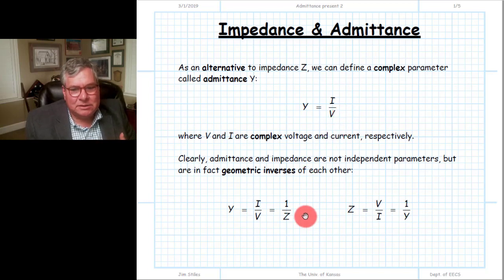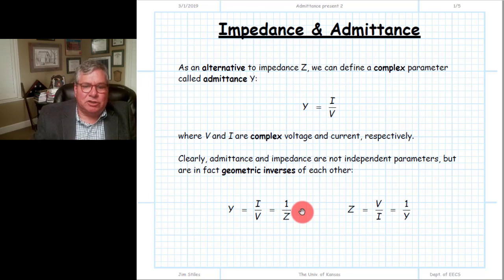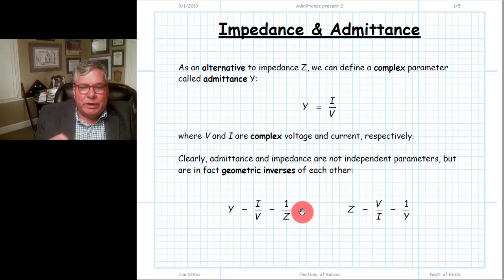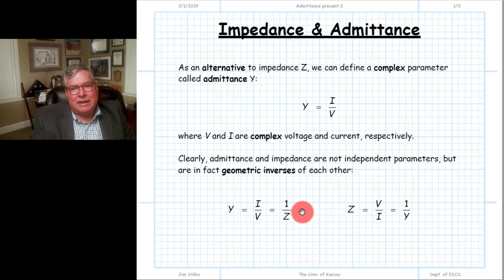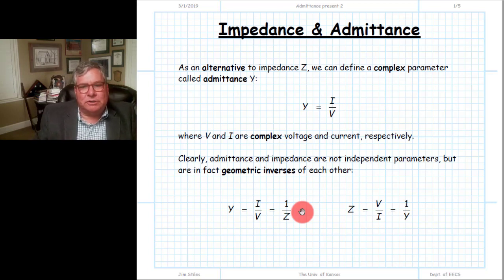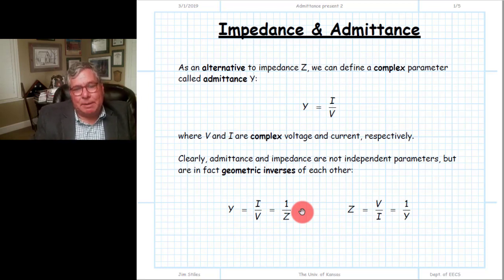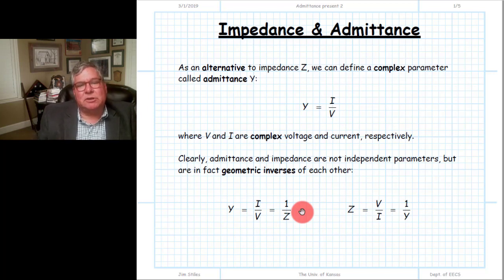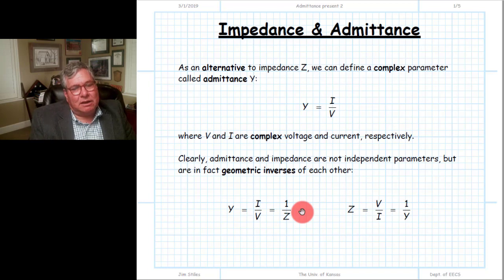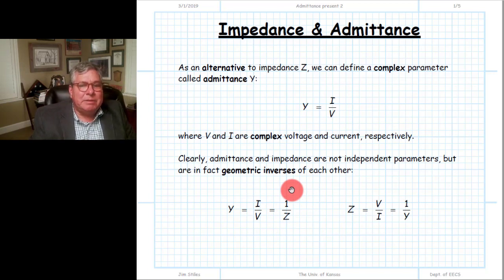The relationship between admittance and impedance is simply a geometric one — a geometric inverse. For a specific admittance there is an impedance and vice versa. The important thing to remember here, though, is that the complex admittance has a real portion we call the conductance and an imaginary portion we call the susceptance. But the conductance is simply not one over the resistance of the impedance, nor is the susceptance one over the reactance. Doing this geometric inverse is more complicated than that, so make sure you do that carefully.